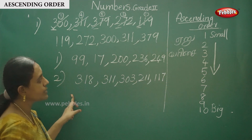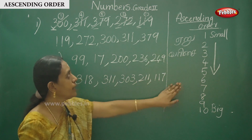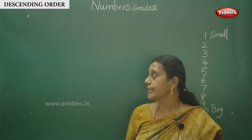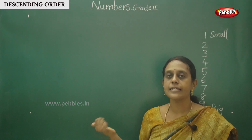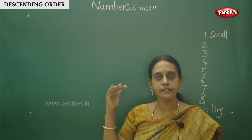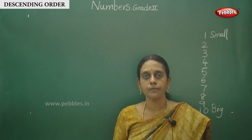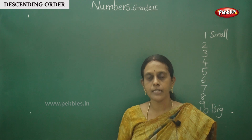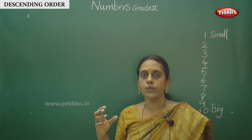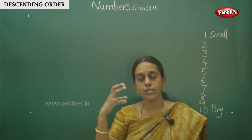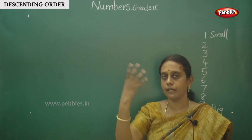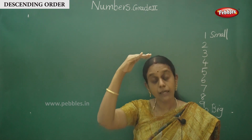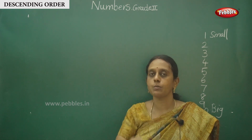These two sums — practice them in this format, in this model. Okay children, next we have to discuss descending order — iraangu varisai. This is the opposite method of ascending order. Ascending order enna? Small to big — chinna number le erindu periya number — eru varisai. Descending order means bigger number to smaller number.